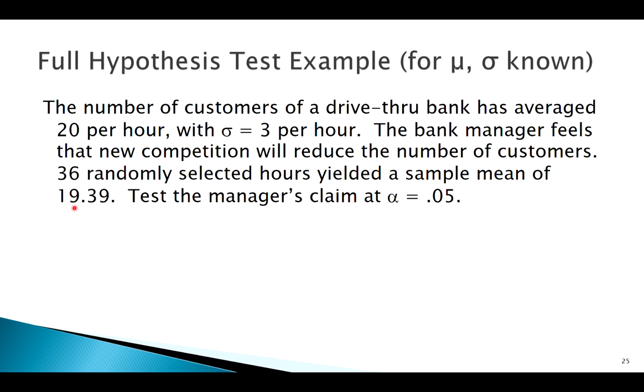Upon examination, 19.39, yes, that's less than 20. But a formal hypothesis test is going to let us sort out, is it actually statistically significantly less? Is there actually something going on here? Could that just be due to chance?